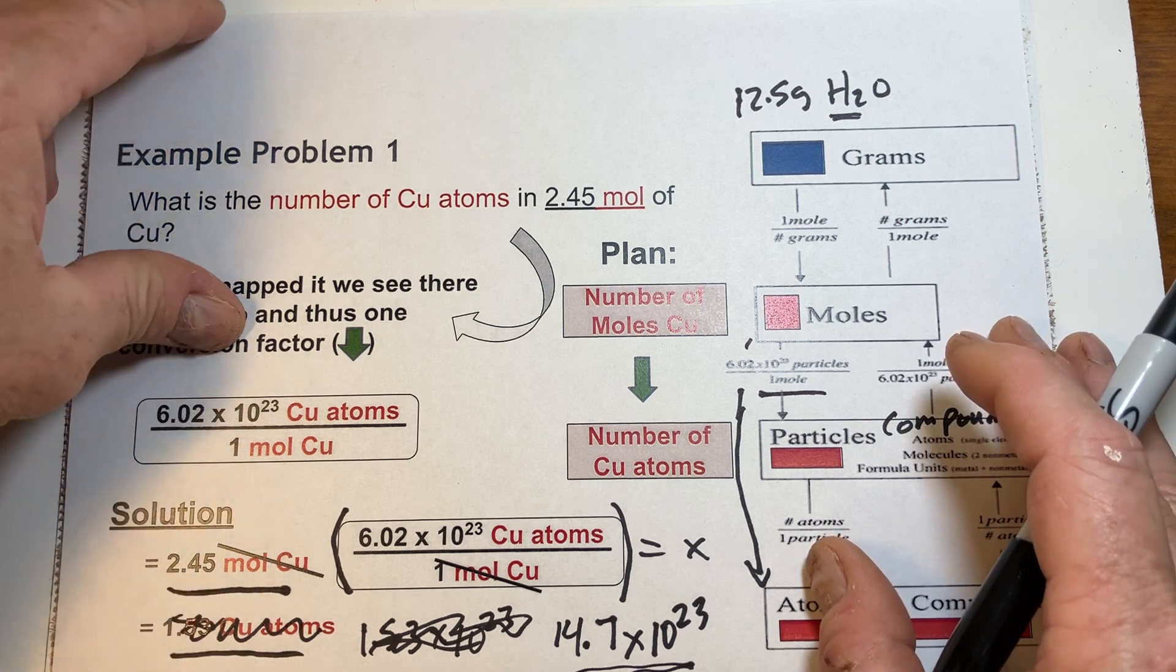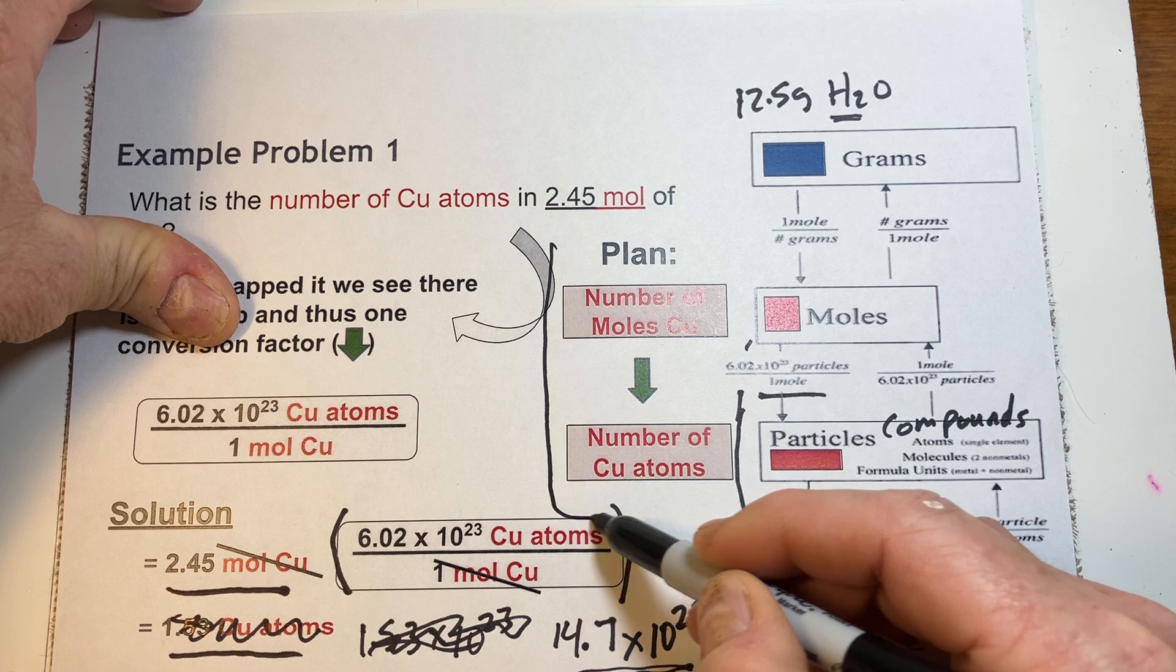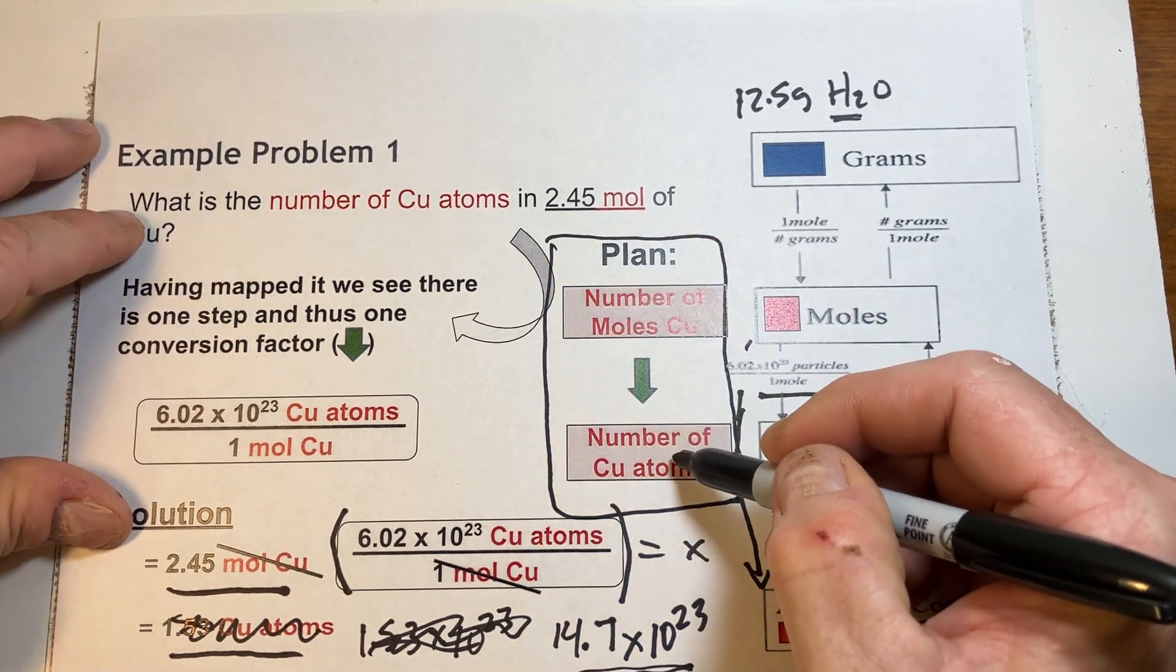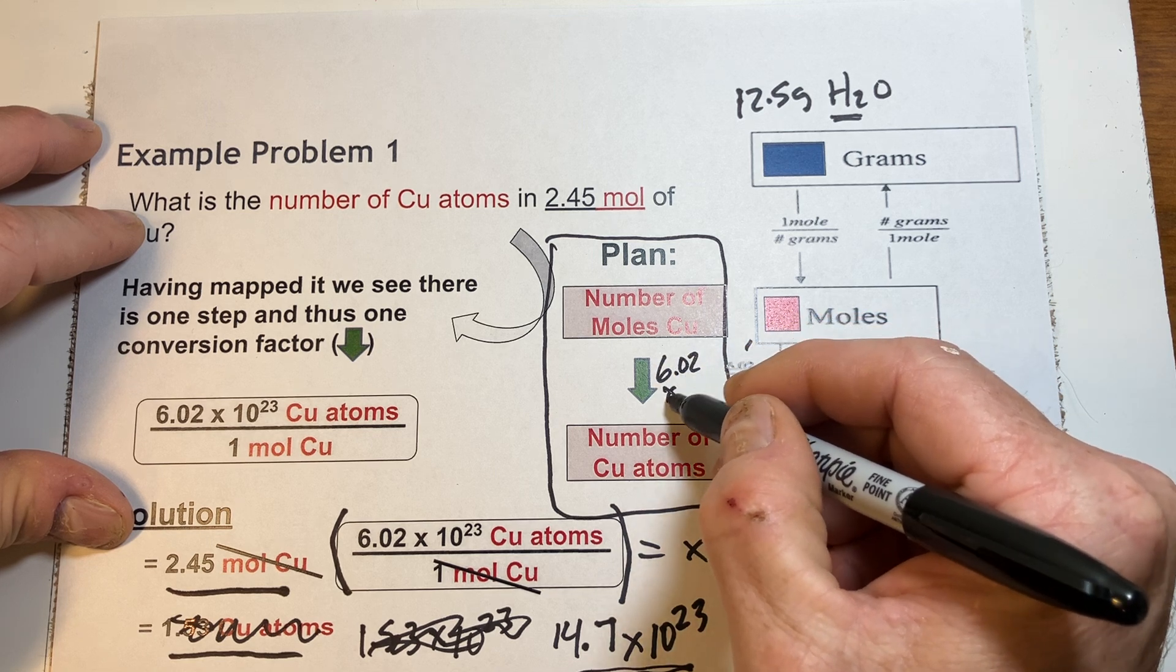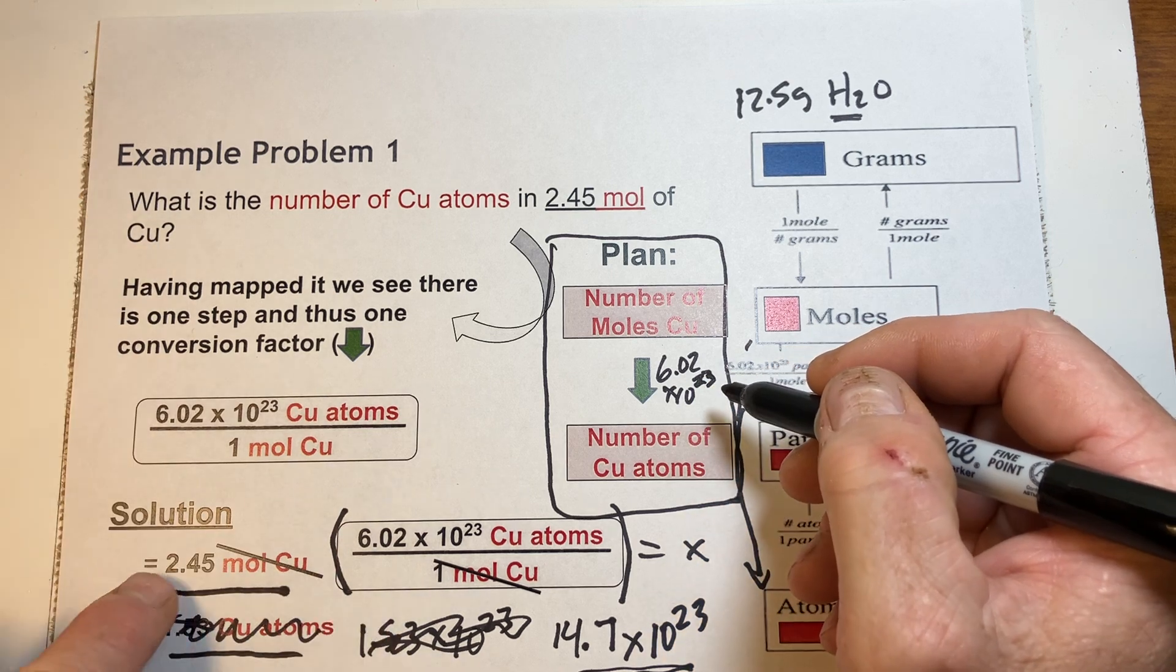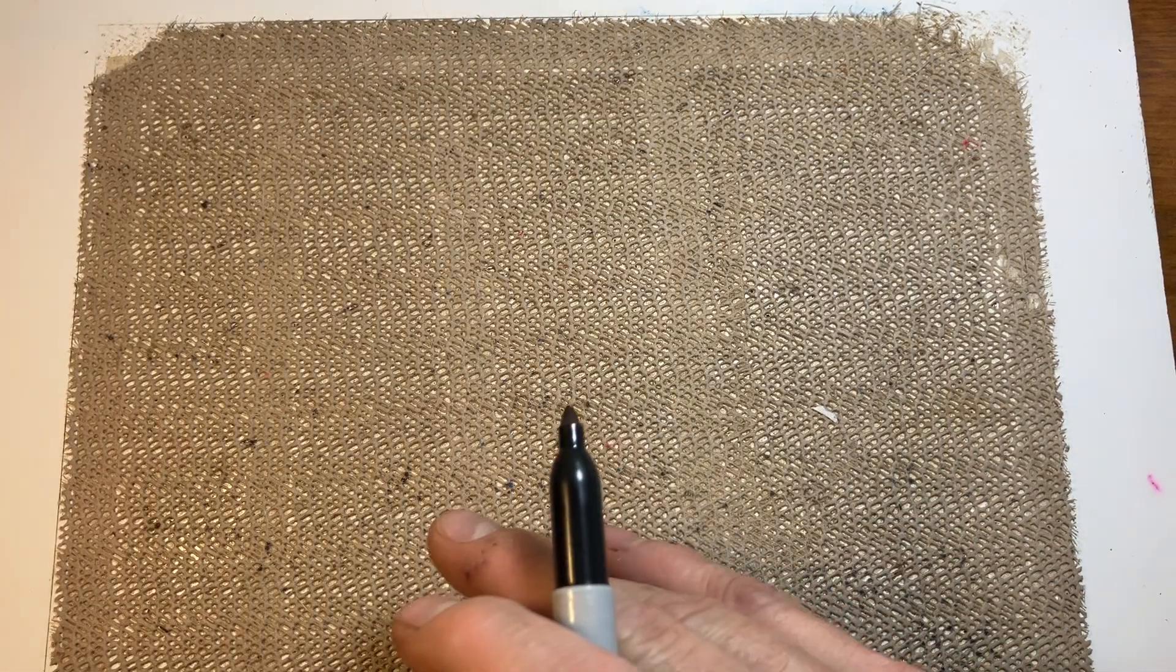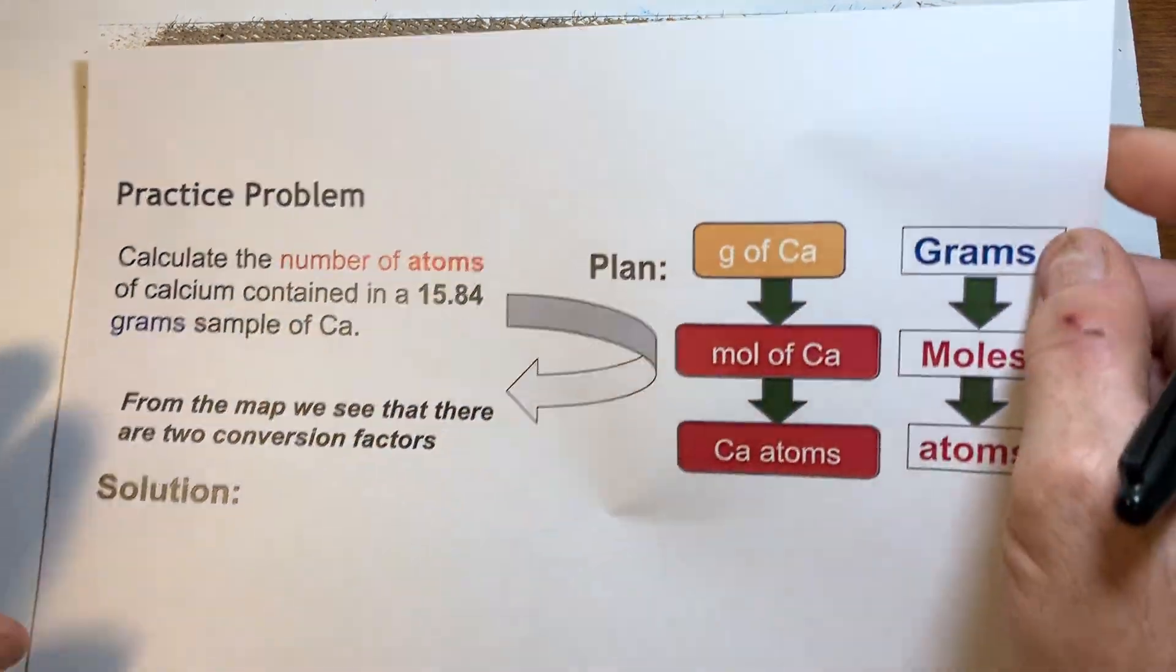So, all I did is multiply the 6.02 times the 2.45. This is wrong. We have 14.7 times 10 to the 23rd copper atoms. So, we have a map we have to often use. In our case, it was simple. We just had to go from number of moles of copper to copper atoms. And in that case, all we had to use is 6.02 times 10 to the 23rd as a mult... on the numerator to multiply that value by. Let's try this one more time. And we'll do more in class.